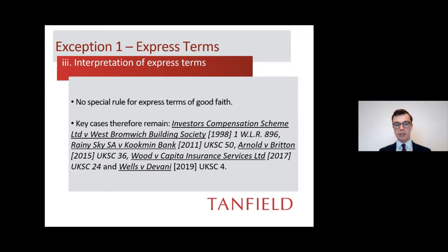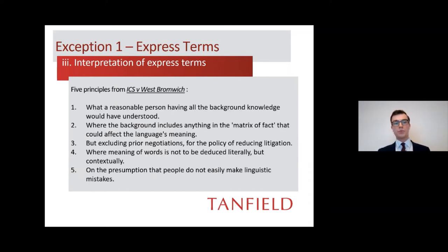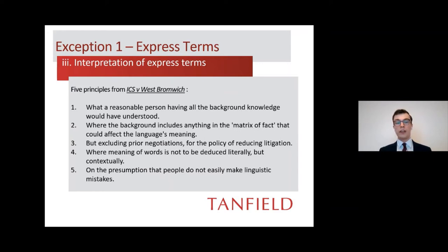The five principles from ICS are: the court asks what a reasonable person would have understood; you can look at the matrix of facts including the background which can affect the language's meaning, but prior negotiations are excluded; the meaning of words is deduced contextually — in the context of the contract as a whole rather than literally; and there is a presumption that people do not easily make linguistic mistakes, particularly in well-drafted contracts.